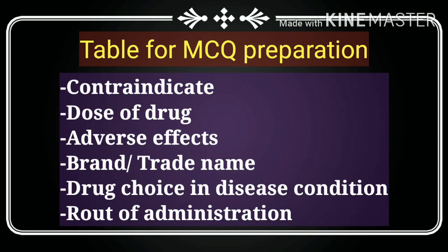I will give you some tricks and tips on how to study pharmacology and toxicology. Make different tables covering: contraindicated drugs, drug of choice, route of administration, brand or trade names, and adverse effects. Create separate tables for each category. Study which drugs are contraindicated in which conditions, and which conditions are produced by which drugs. This table-based approach will help you prepare for pharmacology MCQs effectively.